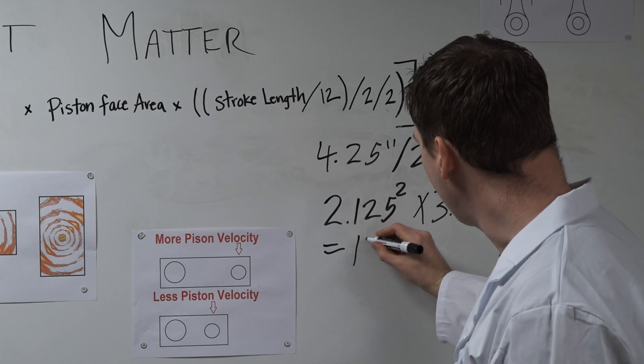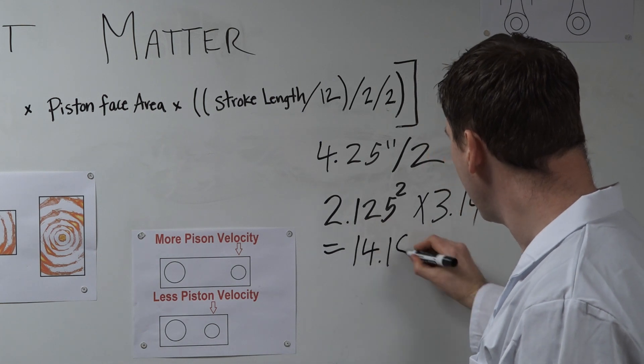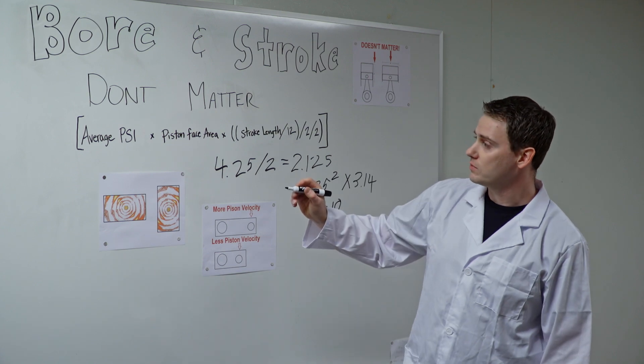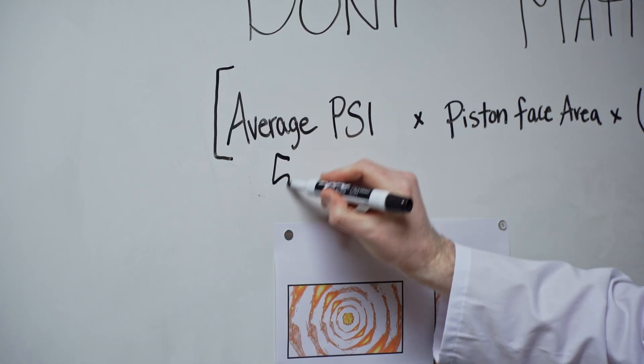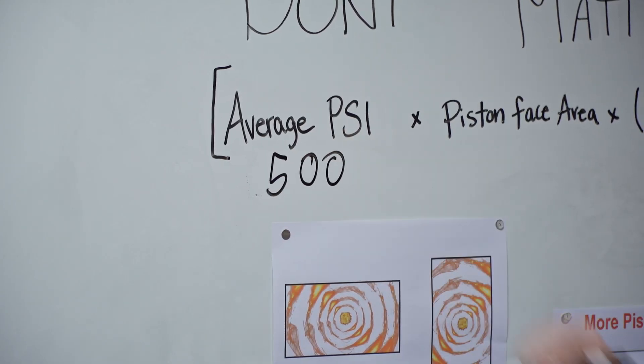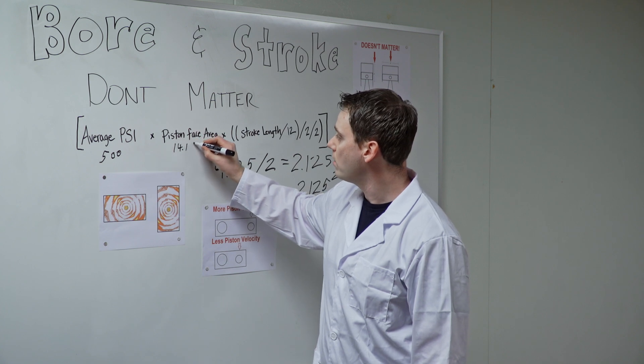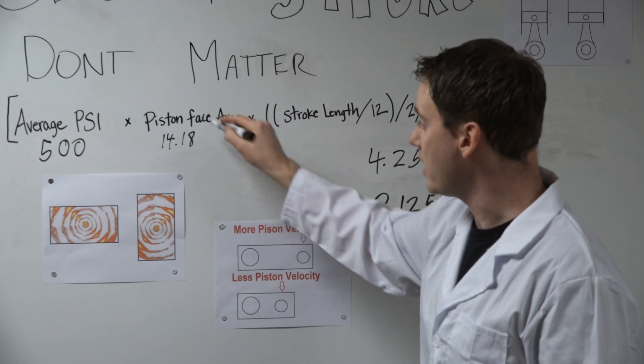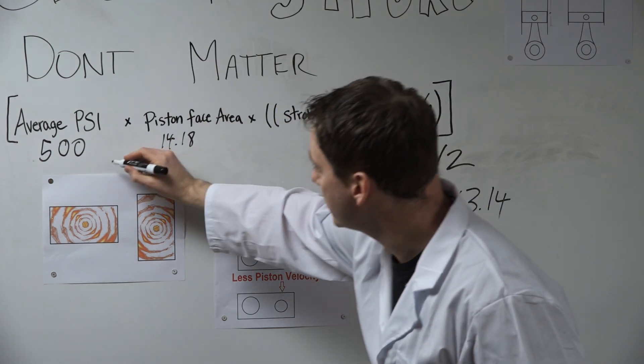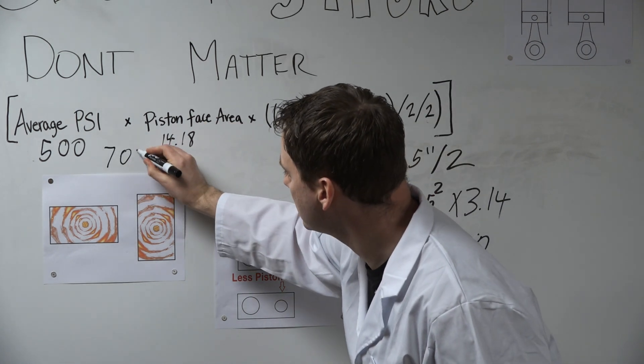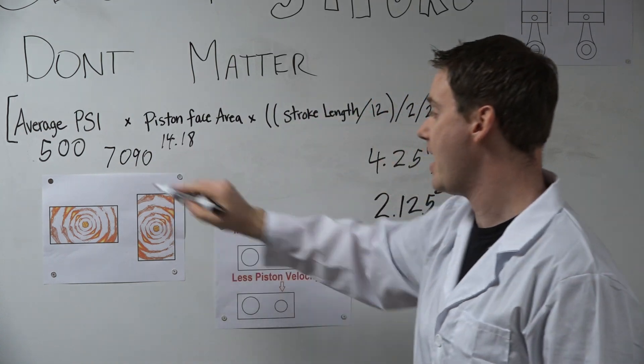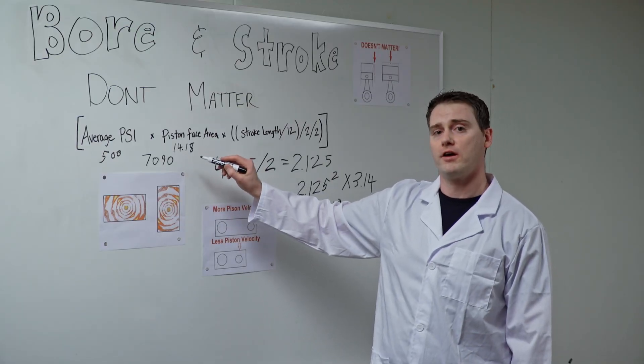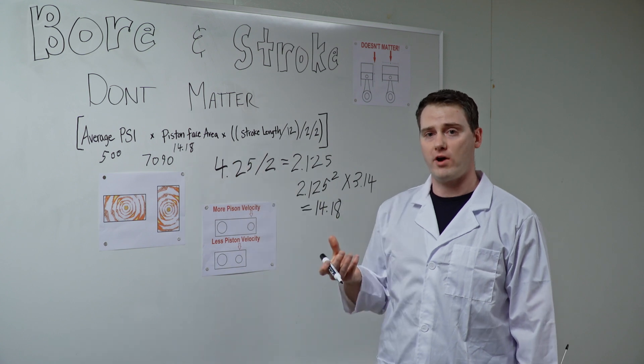So that means we've got an average PSI of 500 times the face area, which is 14.18. Now if we multiply those two together, our average PSI by the piston face area, we get 7,090 pounds. This is the total amount of average pressure on our piston or on our crank pin.